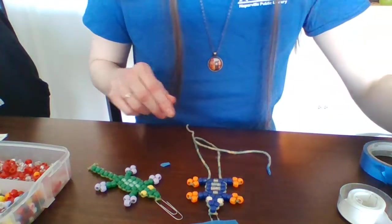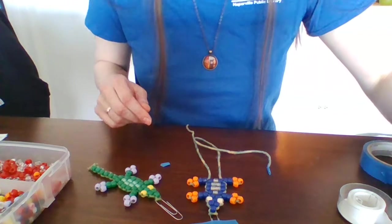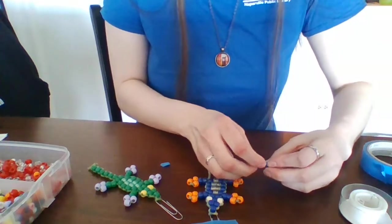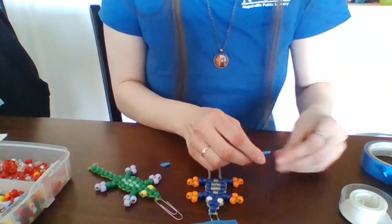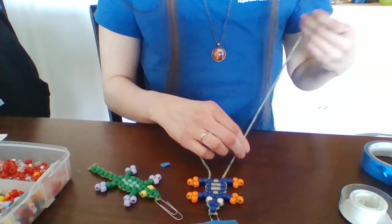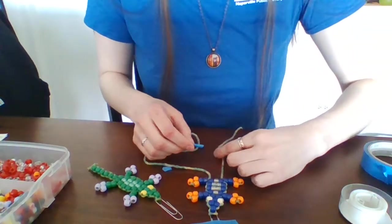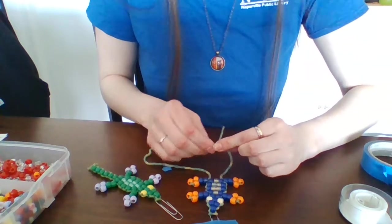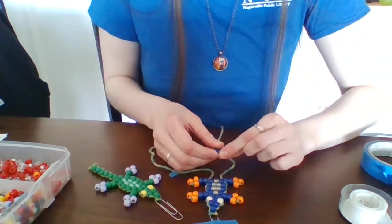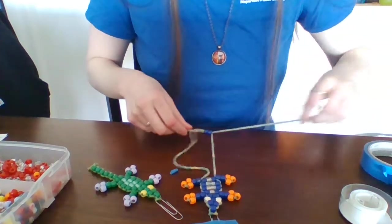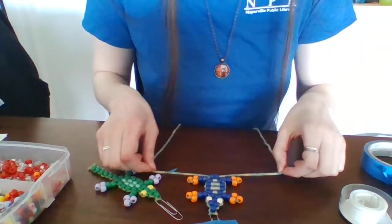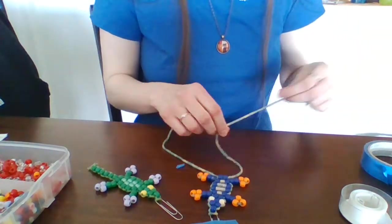All right, we are in the home stretch now, just body beads left. Next you'll take two body beads to begin the end of your lizard and the beginning of the tail. Same classic threading technique. One string one way, one string the other. Pull tight and now we just have the tail left.